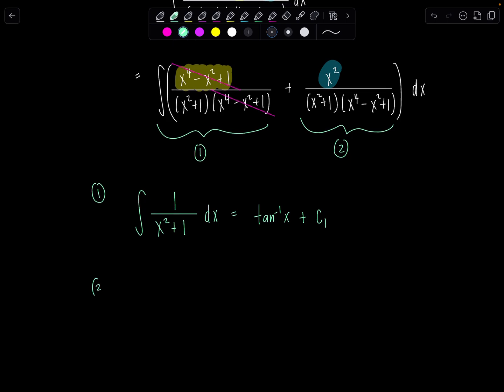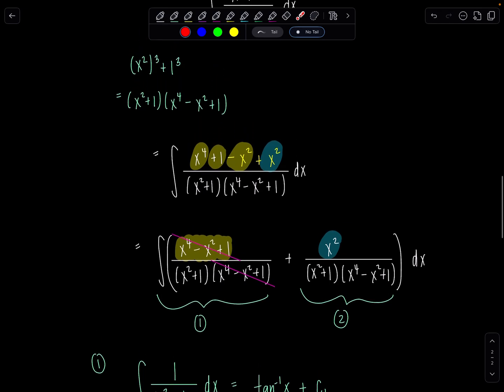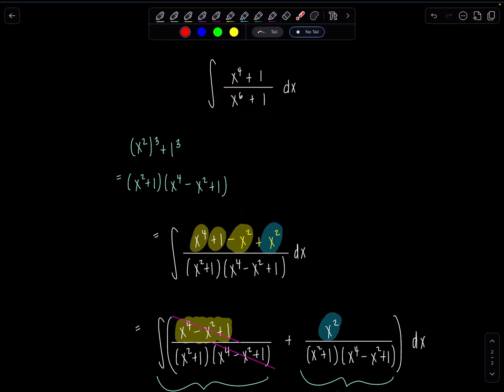Okay, second integral. We have x squared over x squared plus one over x to the fourth minus x squared plus one dx. I'm gonna admit, I spent too long staring at this guy playing around with silly options before I realized, hello, instead of leaving this denominator in factored form, I'm going to go back to how it was originally in the problem, x to the sixth plus one.